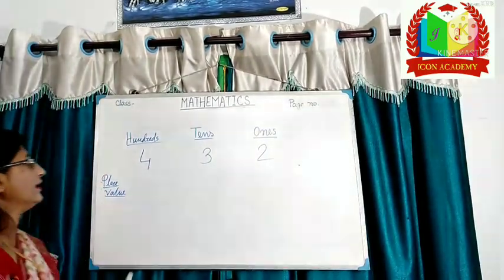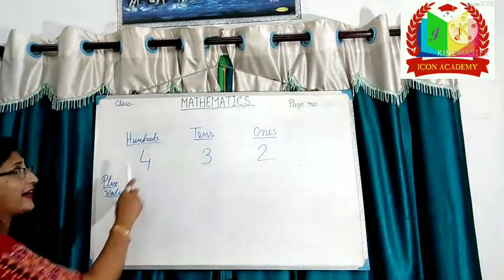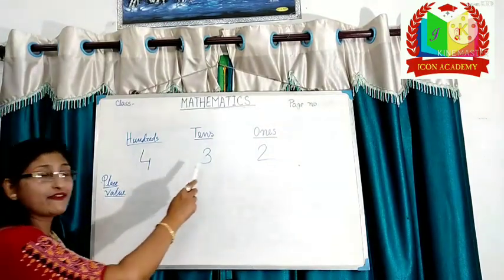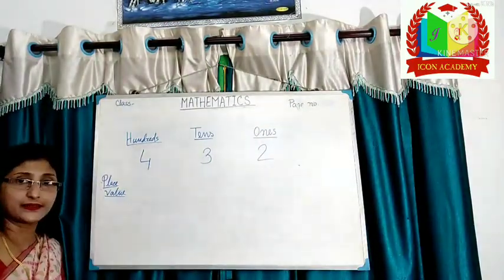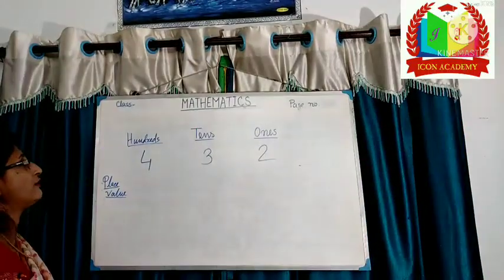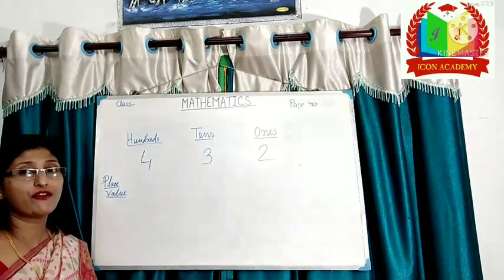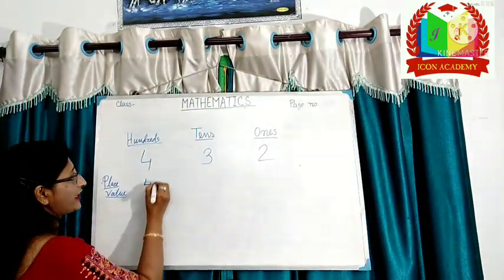Another example. Four hundred thirty-two. We write the hundredth place to the left of the tens place. How many hundreds do you have? Four is on hundredth place. So, place value of four is four hundred.